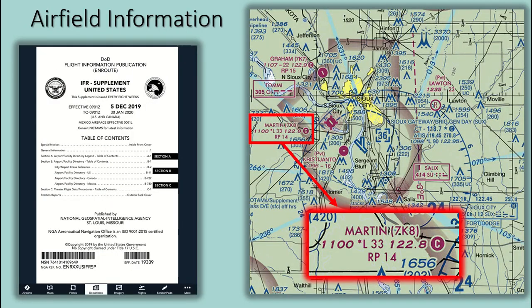We'll start by looking at airfield information on the sectional. Here is Martin non-towered airfield. The airfield identifier is seven kilo eight. Martin's field elevation is eleven hundred feet MSL. The runway has pilot-controlled lighting for night operations, but the asterisk means limitations exist and you should look up the airfield in the IFR supplement document in ForeFlight. The runway length at Martin is thirty-three hundred feet. The common traffic advisory frequency for making position reports is 122.8.